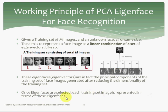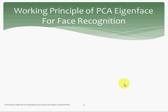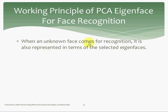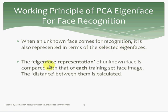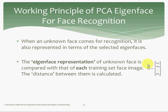When the eigenvectors are selected, each training set image is represented in terms of the eigenvectors — this is the weight vector we talked about earlier. When an unknown face comes for recognition, it is also represented in terms of the selected K eigenvectors. This eigenvector representation of the face is then compared with that of each training set face image. So each image in the training set has a weight vector, and when a new face comes in, we generate its weight vector and compare it with each image in the training set.